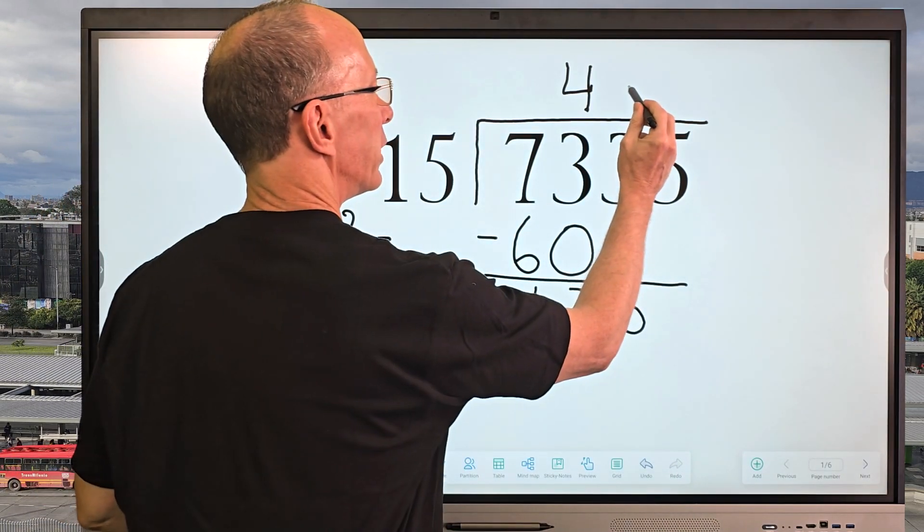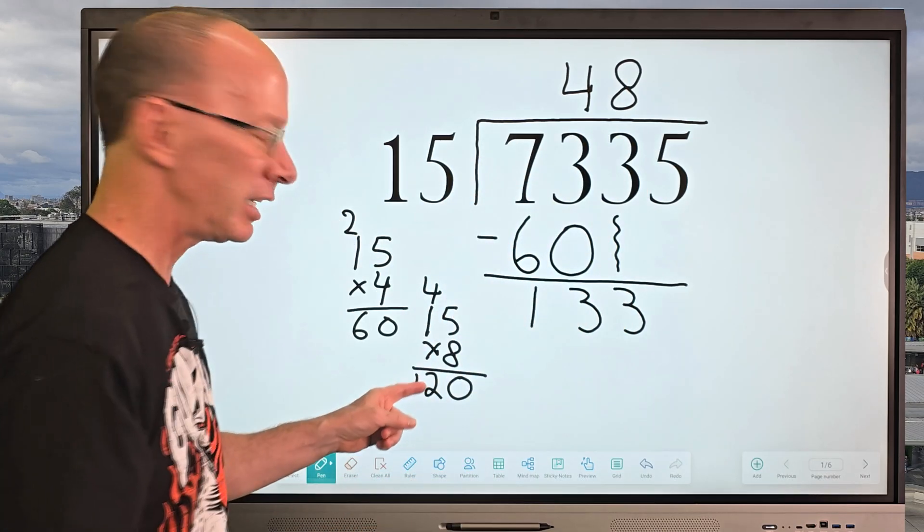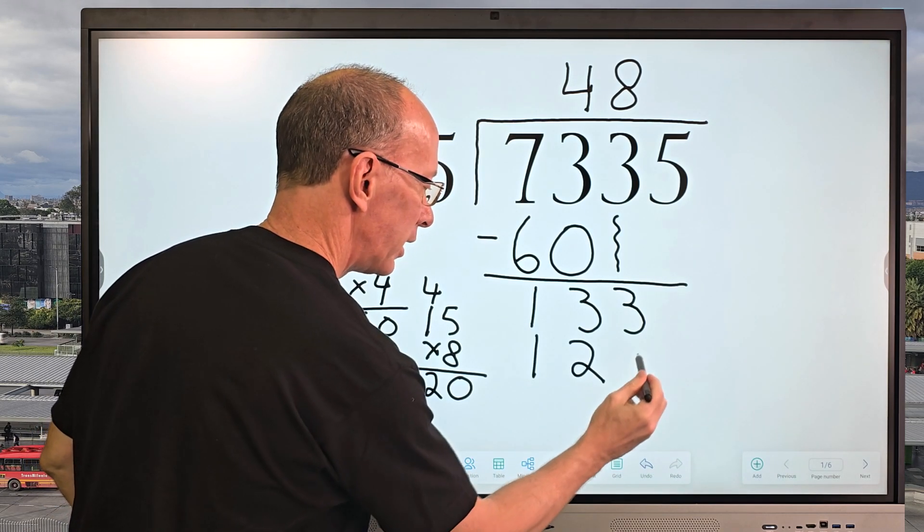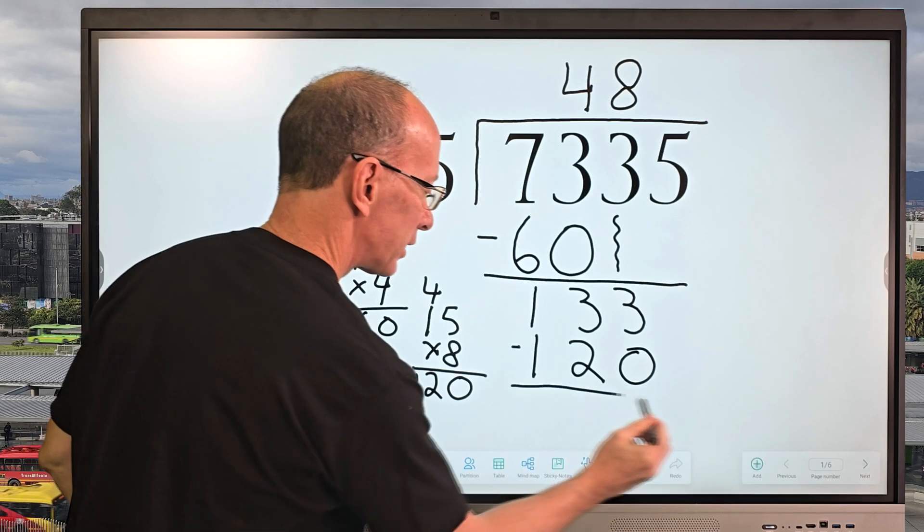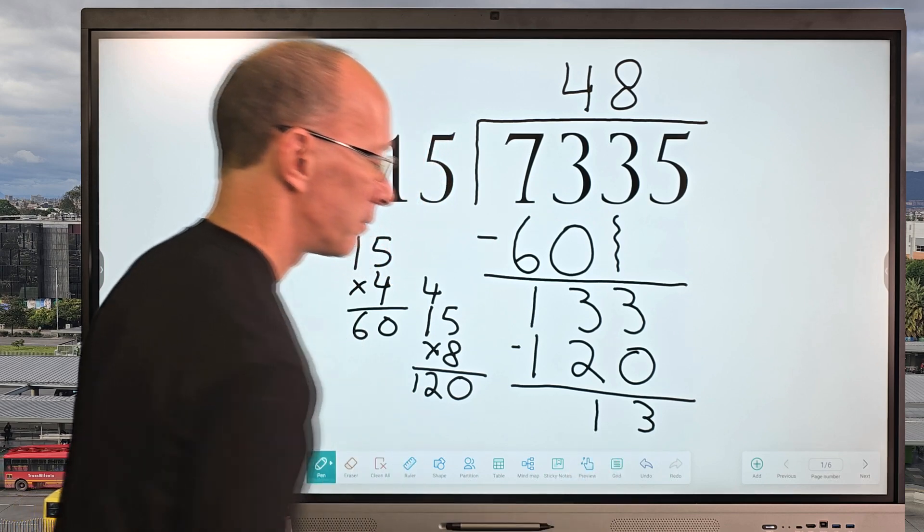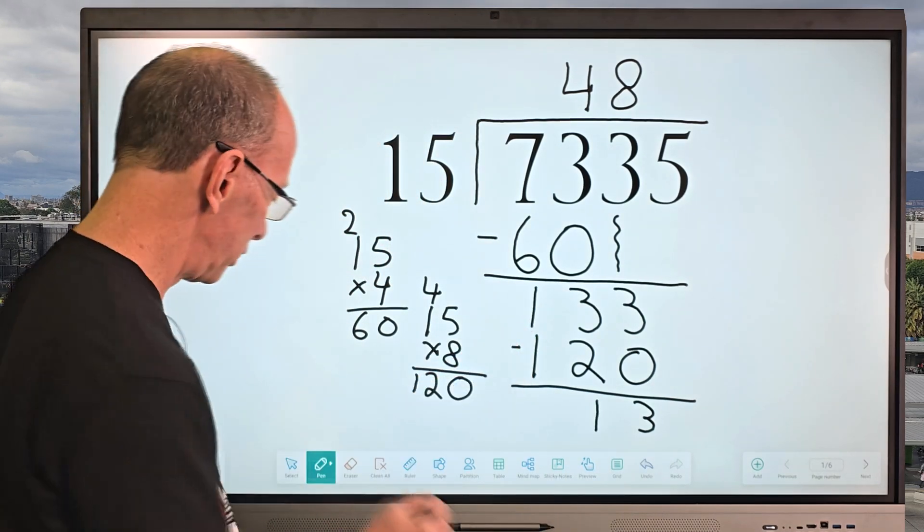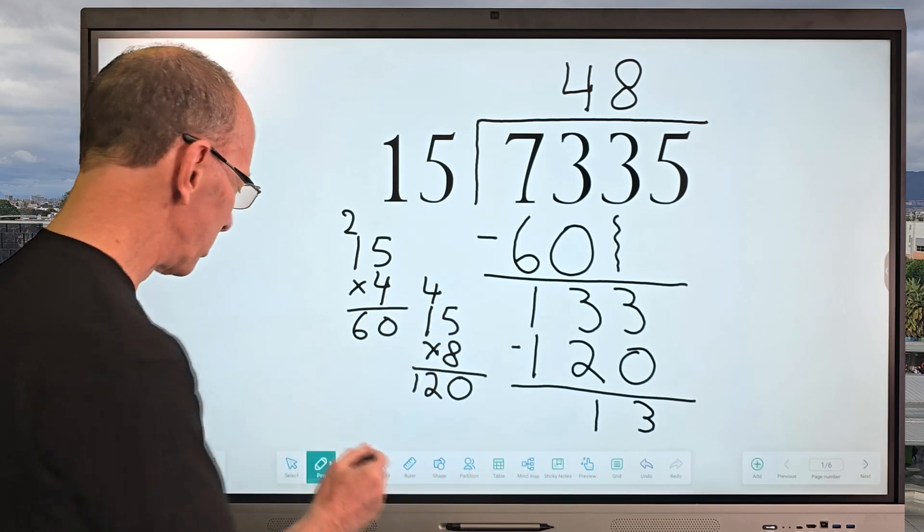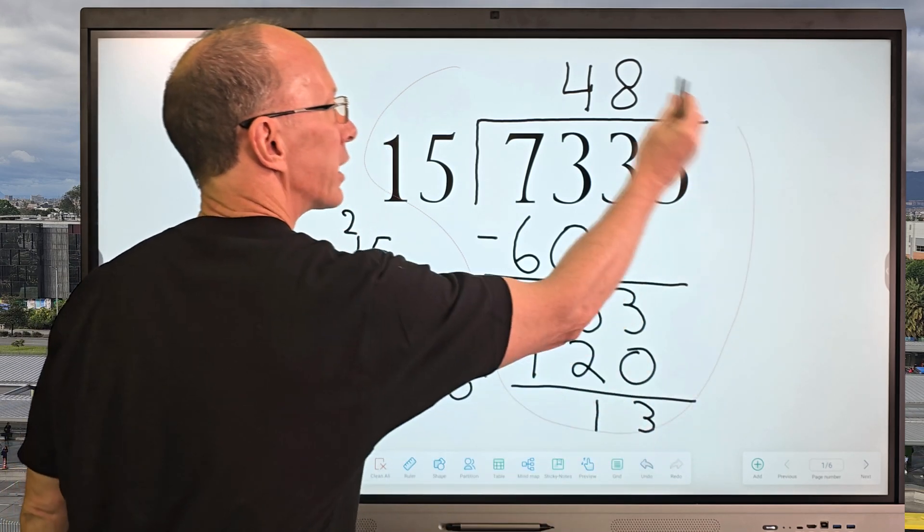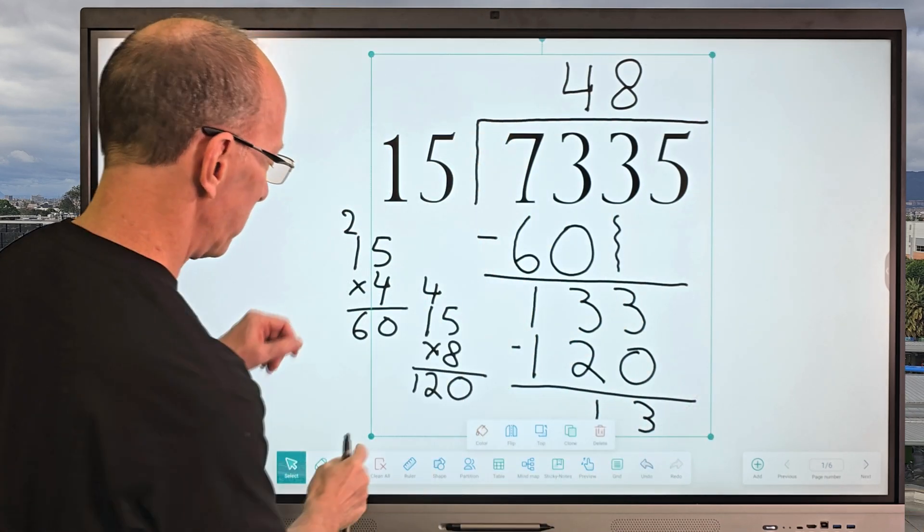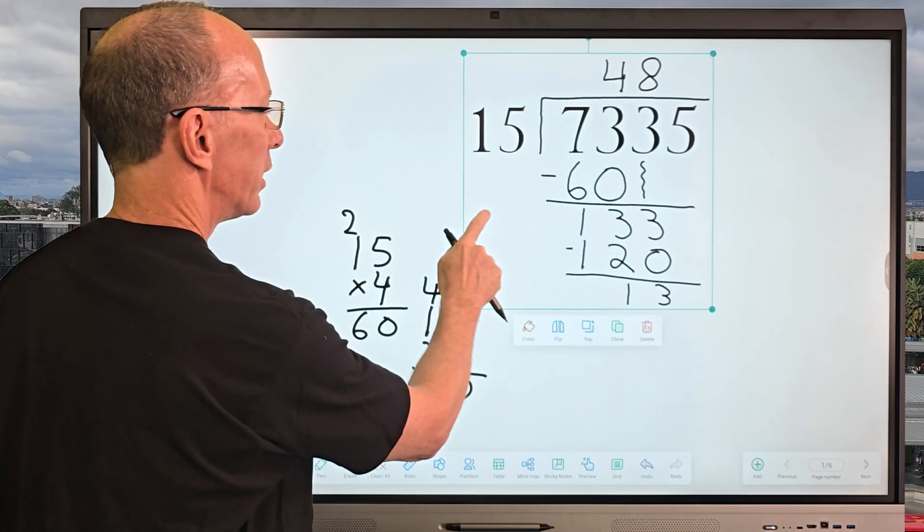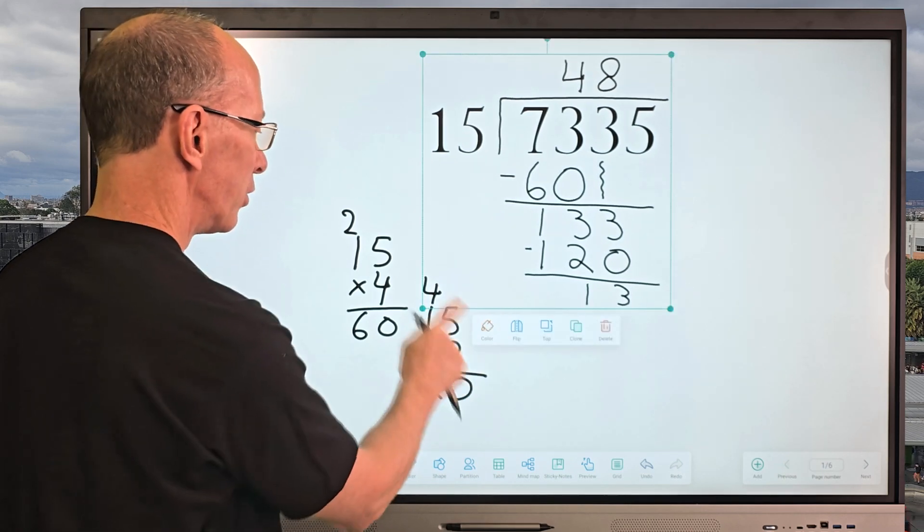So I'm going to go ahead and put 8 right here. 8 times 15 would be 120. I put 120 right here. And I'm going to go ahead and subtract. And so I put the 3 down here. And then the 1 right there. So we still have some more to do here. And it's getting crowded on the board. So what I'm going to do is I'm going to go ahead and select all this right here. I love working on smart boards. And I'm going to make this a little bit smaller so I can work with this. All right. I think I got enough room now to work.